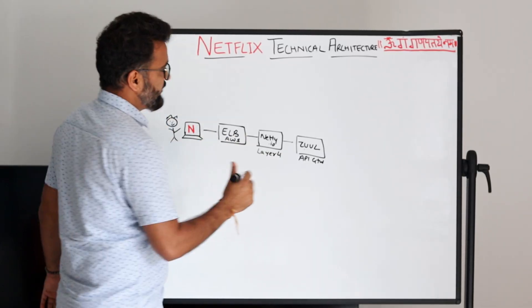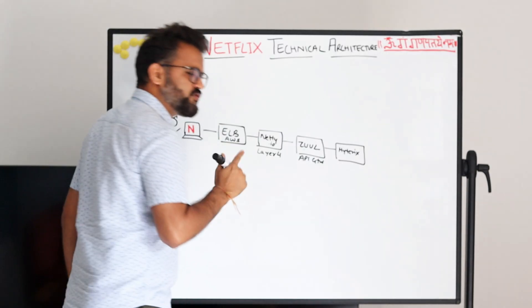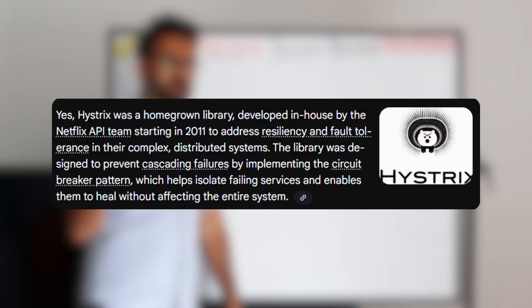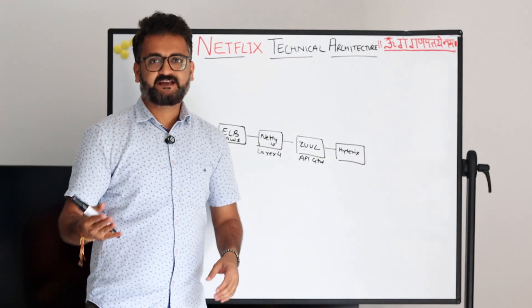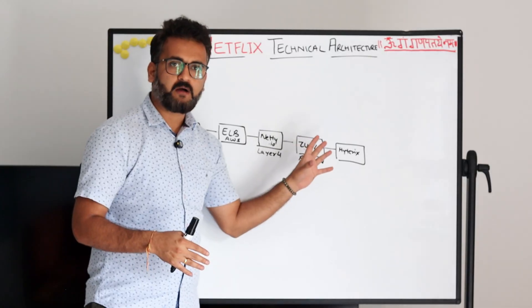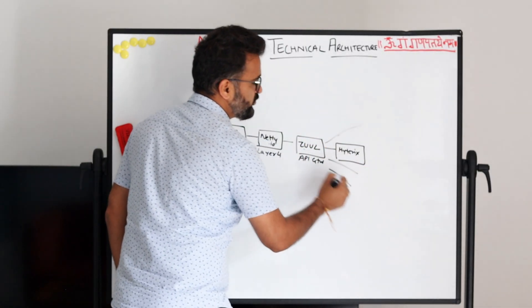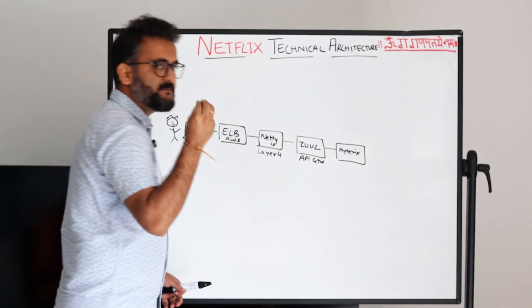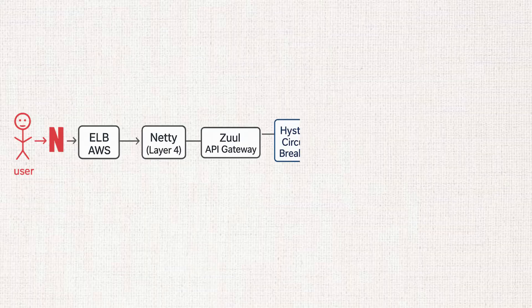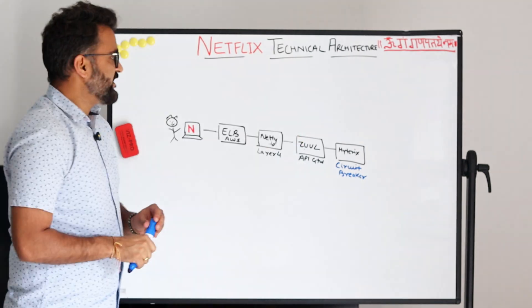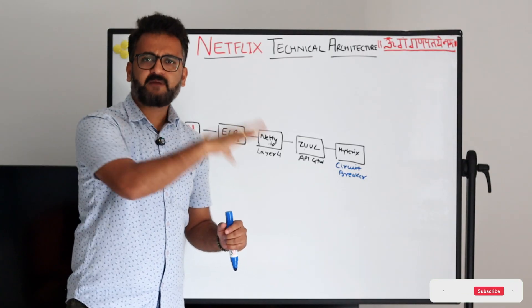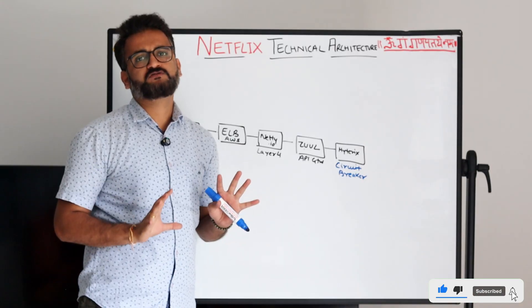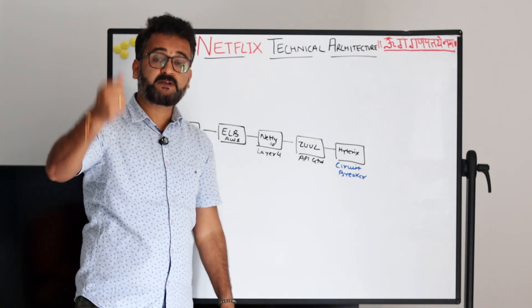Once the request goes through the API gateway, there is another service called Hystrix, which is a resiliency framework. With so many requests coming in, directly hitting the microservices without a buffer is not a good setup. Hystrix implements an important resiliency pattern called the circuit breaker pattern. This means that if there is no response from a particular microservice, the user doesn't get stuck — either something is returned from cache, or another microservice feeds the request, ensuring the user experience is not hampered.